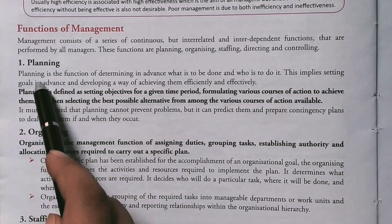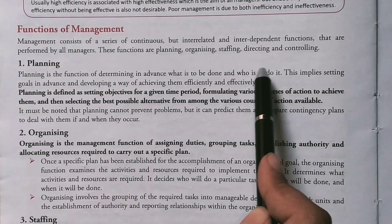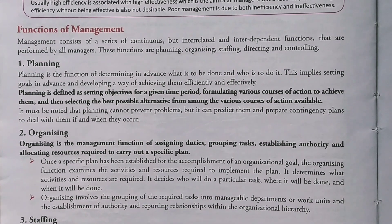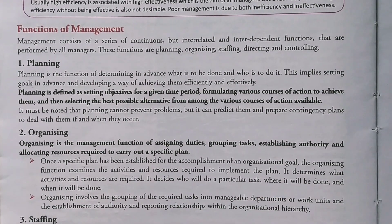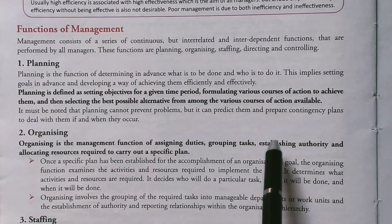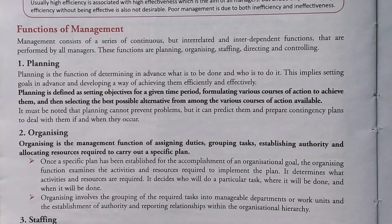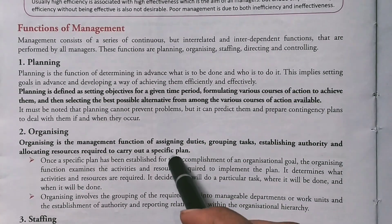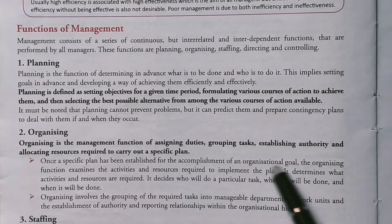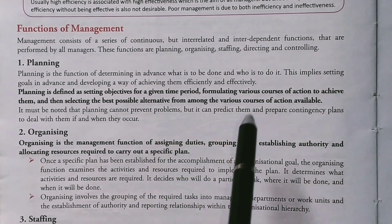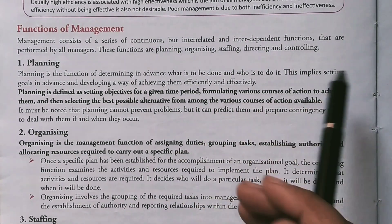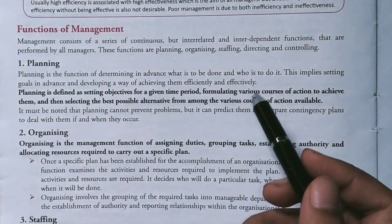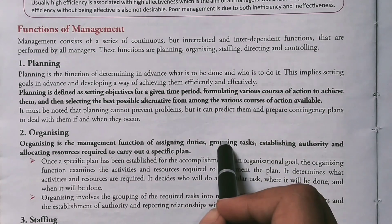The first function is planning. Planning is the function of determining in advance what is to be done, how it is to be done, and who is to do it. For example, if you are in 12th, some students plan which college they want to go to, how many marks are required, and what subjects are required. Or you can plan your profession — in 12th you choose your stream, and that depends on planning. Planning means knowing in advance what needs to be done, how to do it, and who will do it.